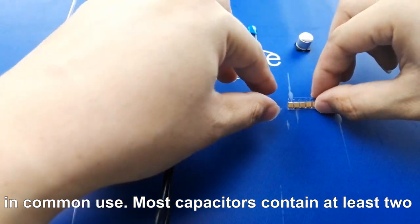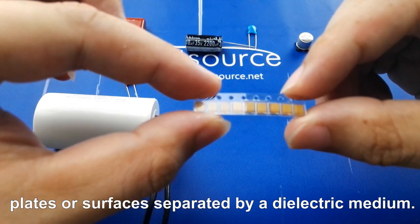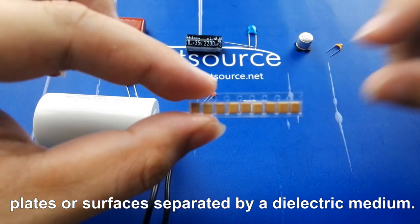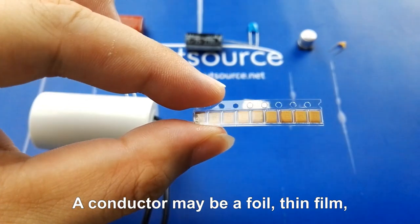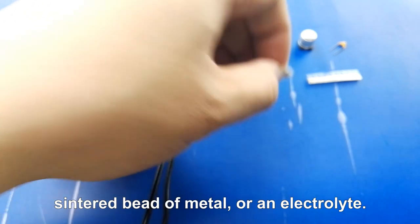Most capacitors contain at least two electrical conductors, often in the form of metallic plates or surfaces separated by a dielectric medium. A conductor may be a foil, thin film, sintered bead of metal, or an electrolyte.